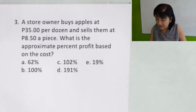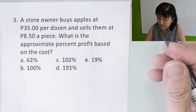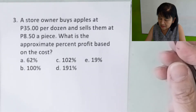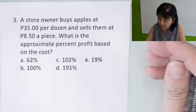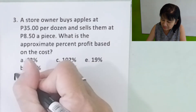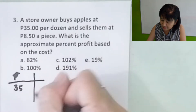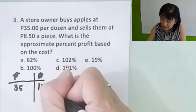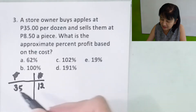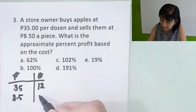Next is problem number 3. A store owner buys apples at 35 pesos per dozen and sells them at 8.50 pesos apiece. What is the approximate percent profit based on the cost?